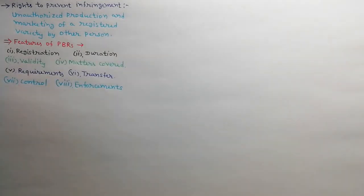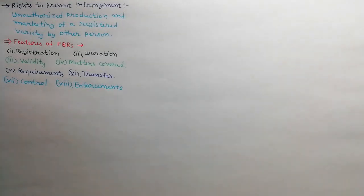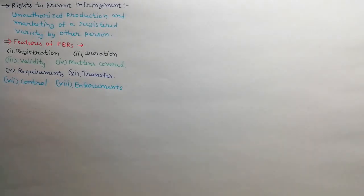Features of plant breeder rights include registration, duration, validity, matters covered, requirements, transfer, control, and enforcements.